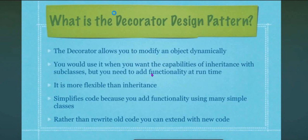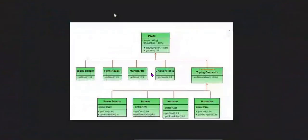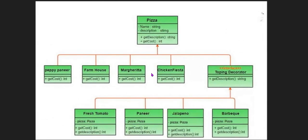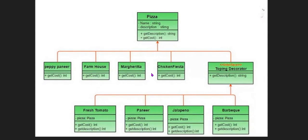Here is a simple example to illustrate. Pizza is the main structure. We can add functionality like peppy paneer, farmers, and different kinds of pizzas as additional features on top of that base structure.